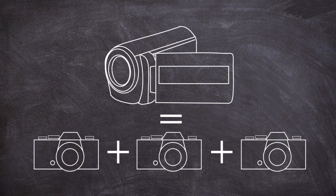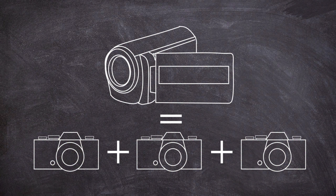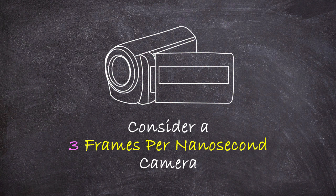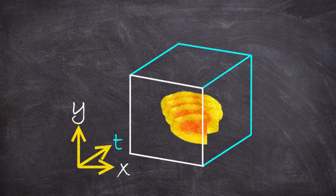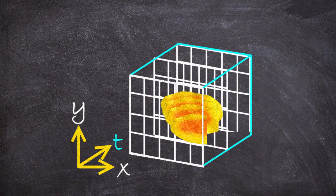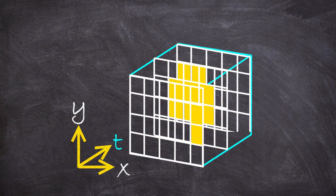Instead we generally use a video camera and take a video. In a video what you do is you take many single exposures, each called a frame, and try to basically repeat the process over and over again as fast as possible. Say if we have a camera that films at three frames per nanosecond, which is a super fast camera but let's just say we do.